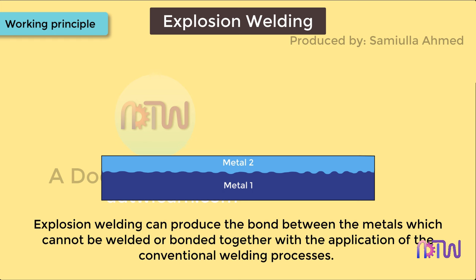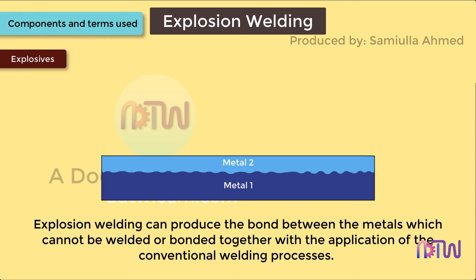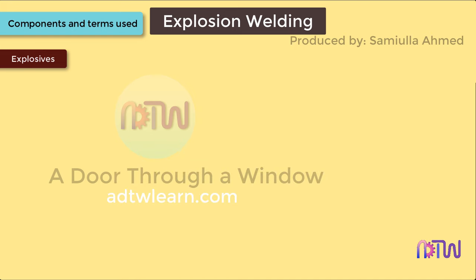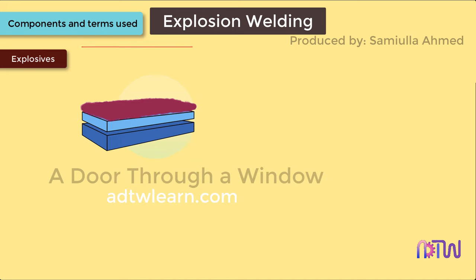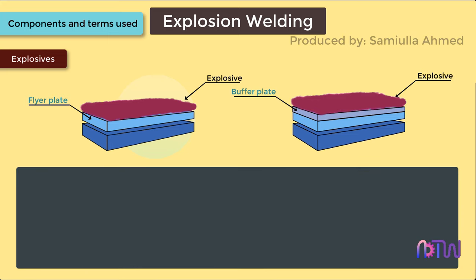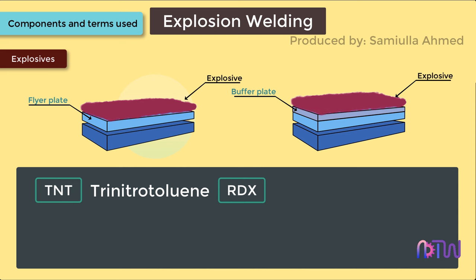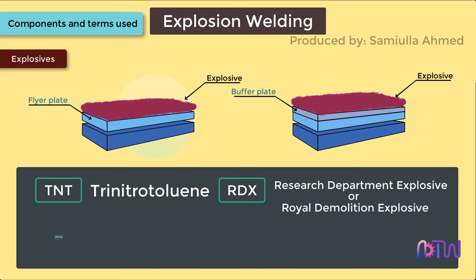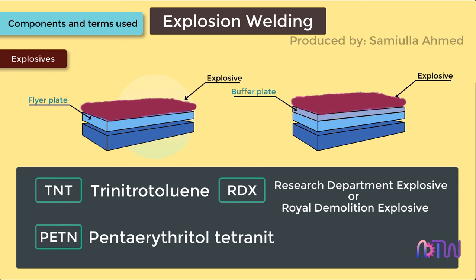Explosives: the explosives are packed in a box structure and are placed on the flyer plate or on the buffer plate. The explosives can be TNT (trinitrotoluene), RDX (Research Department Explosive or Royal Demolition Explosive), or PETN (pentaerythritol tetranitrate).